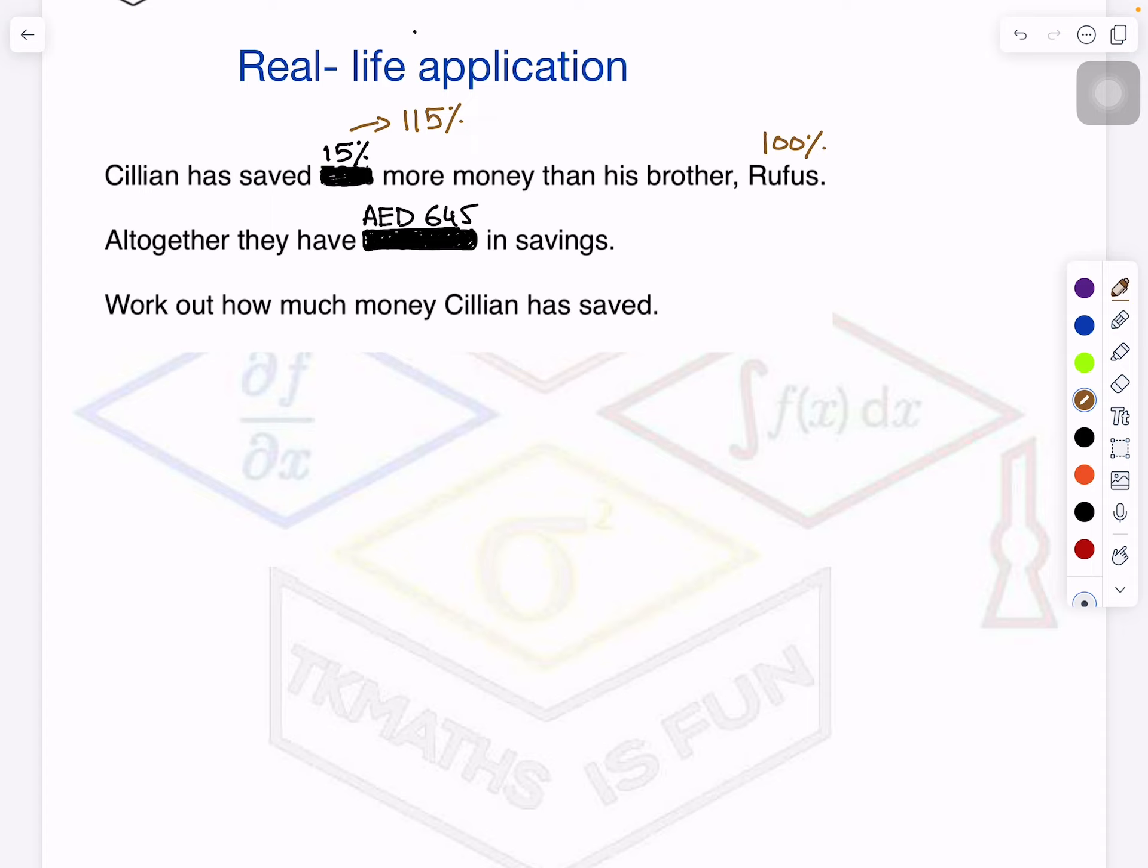We have seen in the previous videos that whenever we are talking in terms of percentages more, we add to 100 - the original thing is always 100%. So now if I see altogether, I know their total amount and I know their percentage also. Together they have 645 dirhams, and in percentage it is 215 - 100 plus 115 is 215. This is Rufus's and this is Cillian's, so together they have 215%.